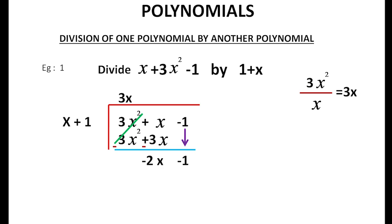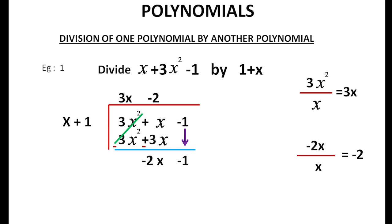After subtraction we get x minus 1, then divide again. The next quotient term is minus 2, because minus 2x divided by x equals minus 2. So minus 2x is the term. We multiply minus 2 by the divisor x plus 1 to get minus 2x minus 2. We do subtraction: negative becomes positive. Minus 2x plus 2x — like terms cancel.